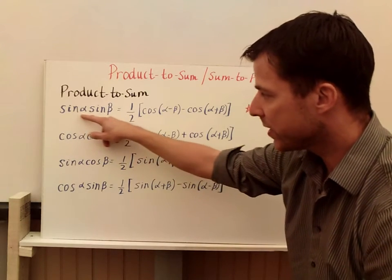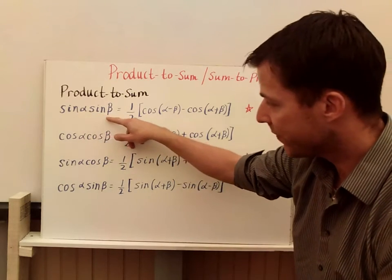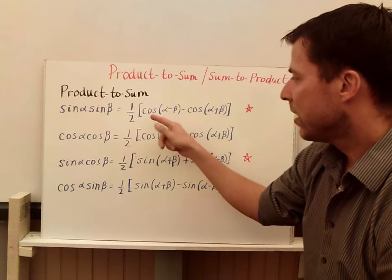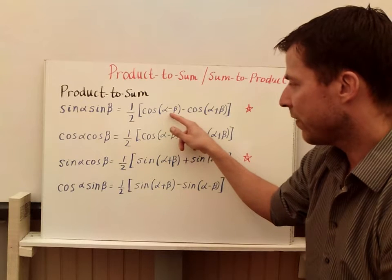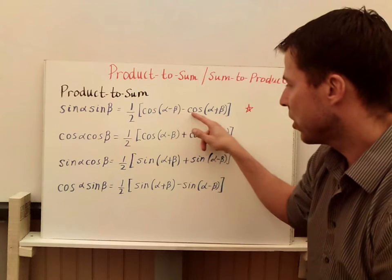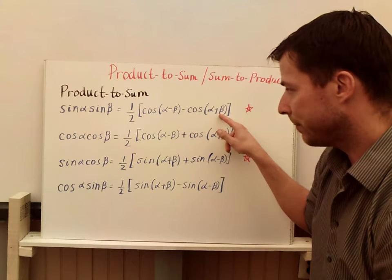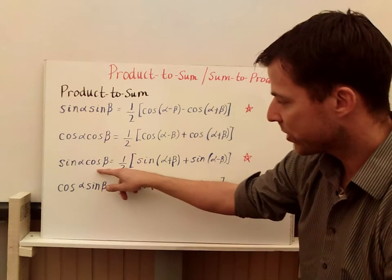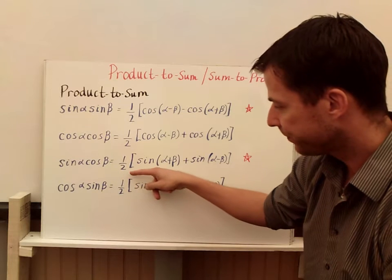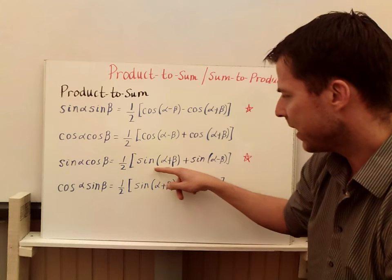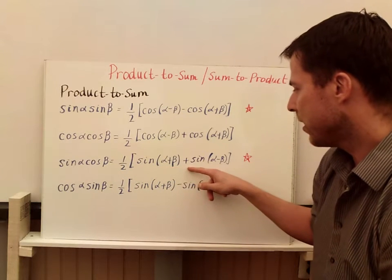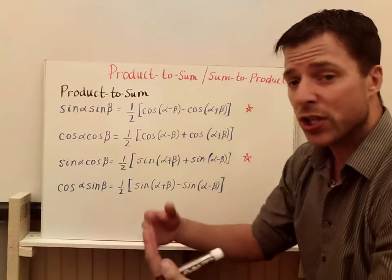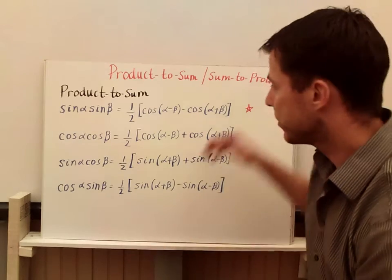So I'll just run through them. If you're multiplying sine of one angle times sine of another angle, you can actually rewrite this as one half times the quantity of the cosine of alpha minus beta minus cosine alpha plus beta. We're going to use that one, and if you go down to the third one, multiplying sine alpha times cosine beta equals one half times the quantity sine of alpha plus beta plus sine of alpha minus beta. So those are the two I'm going to use. We're just going to use them to rewrite some formulas, so there's not much to this.